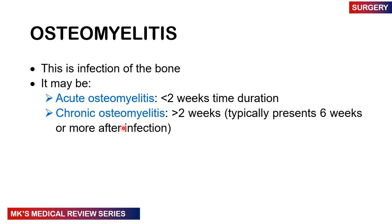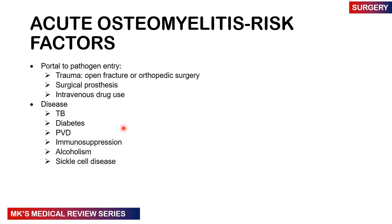Between two weeks and about six weeks, most patients may have a subacute presentation. What are some of the risk factors? The portal of pathogen entry includes any trauma — for example, open fractures or orthopedic surgeries — surgical prostheses, intravenous drug use, and certain diseases like TB, diabetes, peripheral vascular disease, immunosuppression, alcoholism, and sickle cell disease.